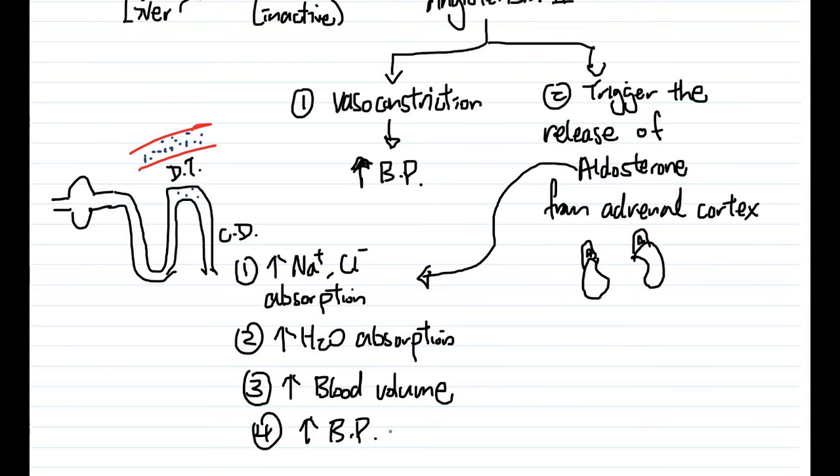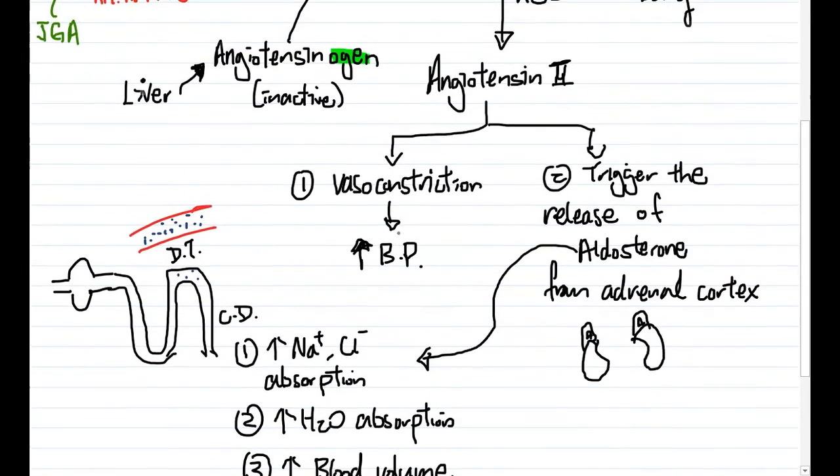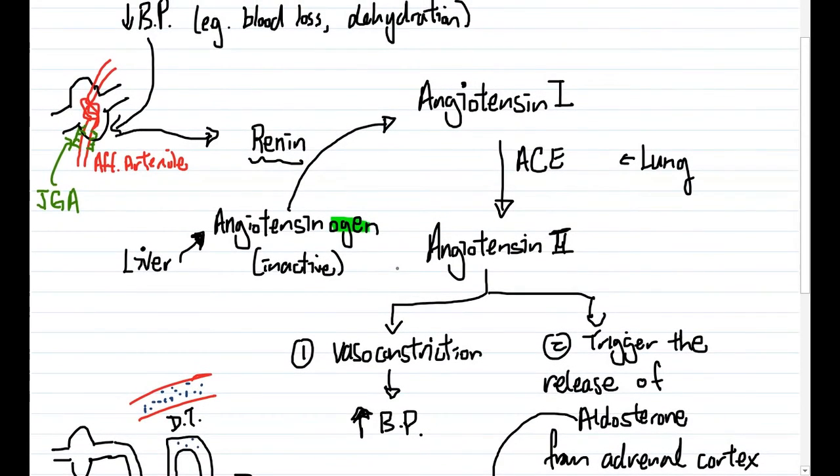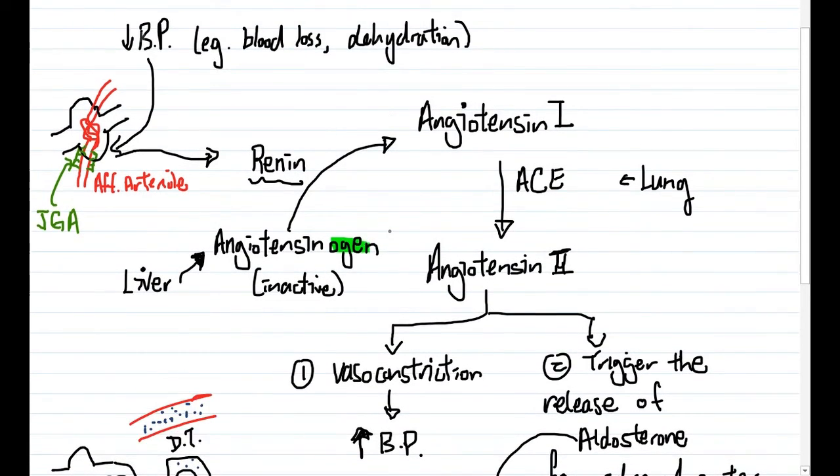So this whole system of renin and angiotensin and aldosterone is going to help you restore blood pressure when there is a sudden drop.